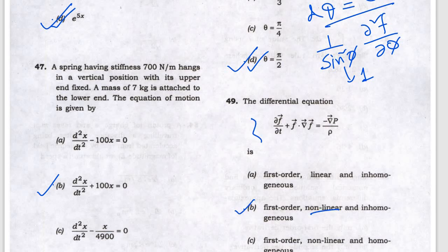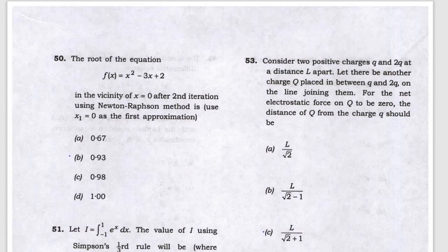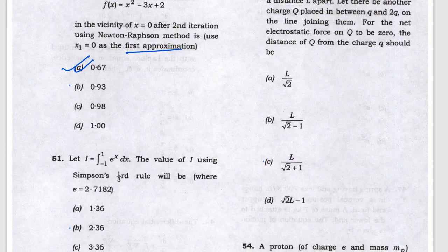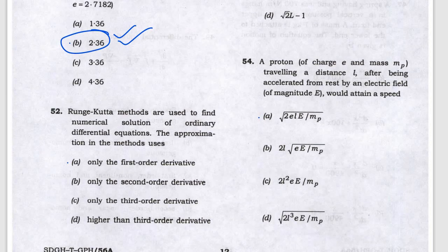Next, the given differential equation is first-order non-linear and inhomogeneous. For the Newton-Raphson method, the first iteration gives answer A. For Simpson's one-third rule, it is simple integration giving answer B. For the Runge-Kutta method, which numerical ODE approximation uses only first-order derivatives — A will be the answer.